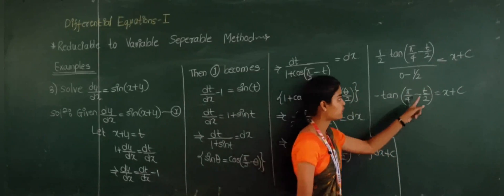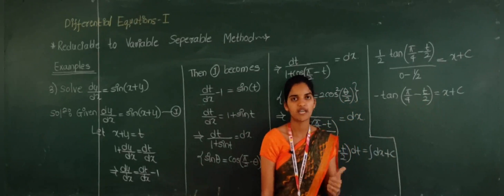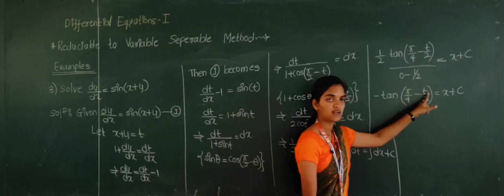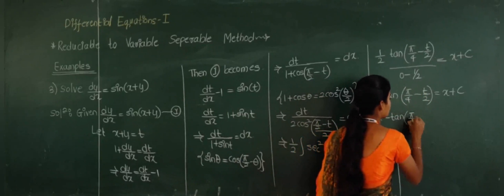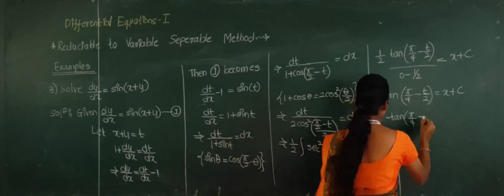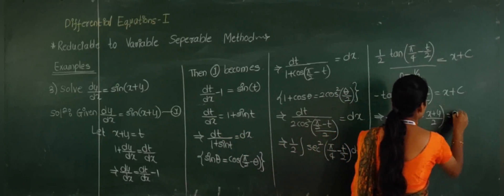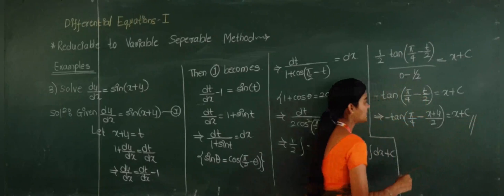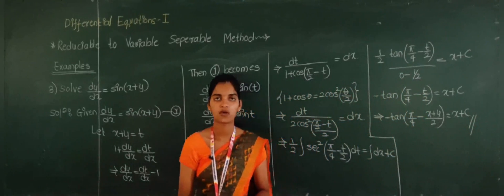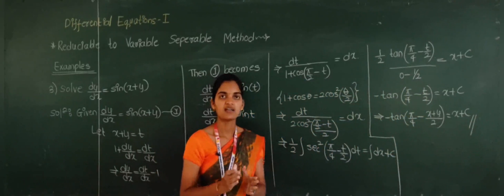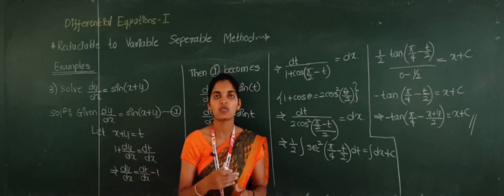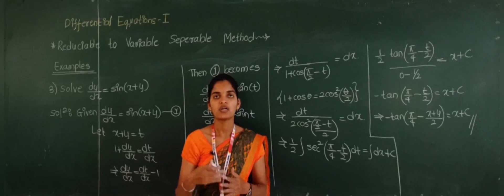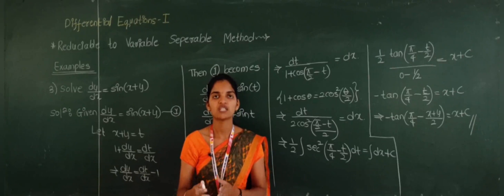We got the answer in terms of t, but we need the solution in terms of x and y. Substituting back t = x + y, the final solution is: −tan(π/4 − (x + y)/2) = x + C. Under the reducible to variable separable method, I have considered three examples. I hope you all understood this method. In the next video, I will start homogeneous differential equations, which are very important. Thank you.